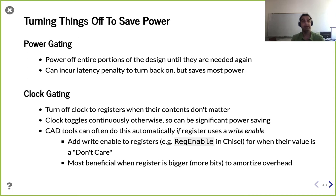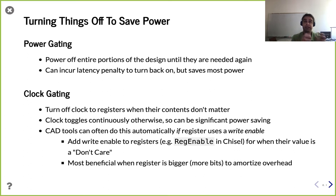Moving on to clock gating: the clock is almost like an adversary when it comes to power consumption. We use it to synchronize state elements, but it goes from one to zero every cycle — that really high activity factor means it's constantly changing. There's power dissipated by the clock network delivering the clock signal to all your registers. If we really don't need a certain portion of design, we can turn off the clock to that portion, stopping it from switching.